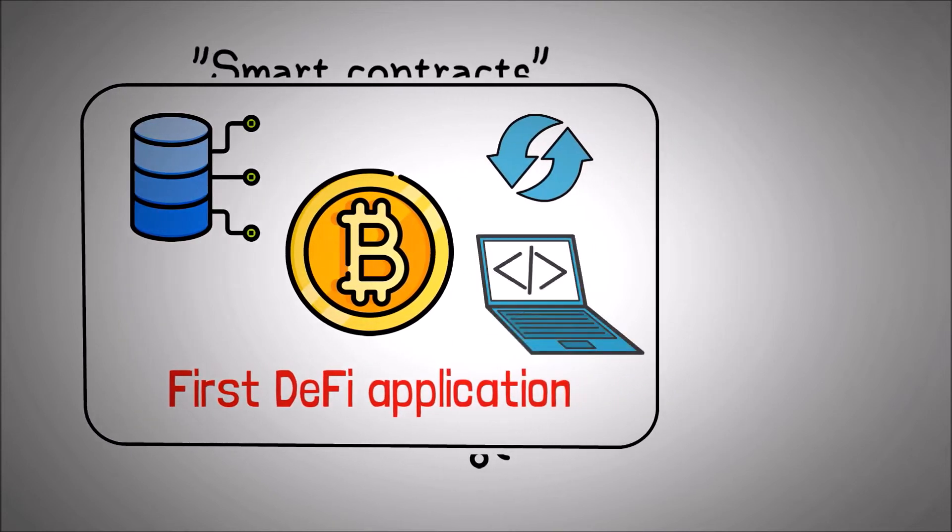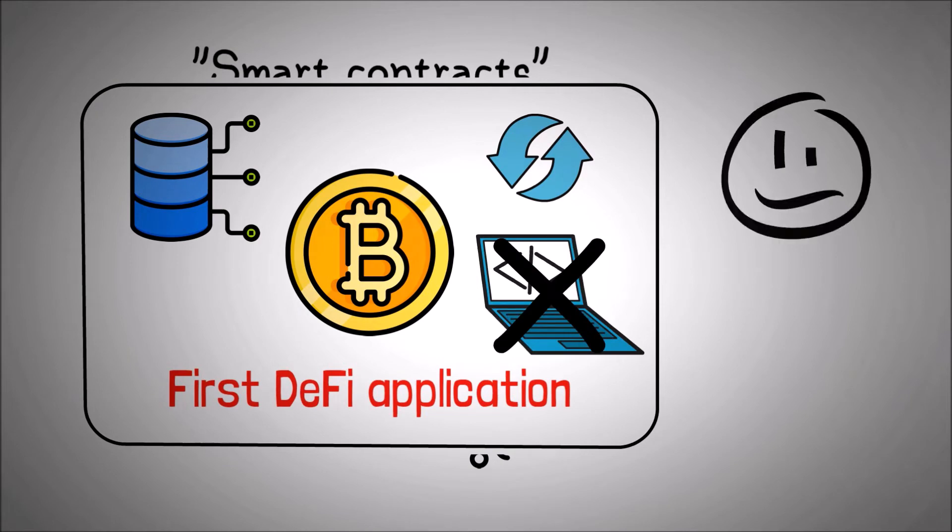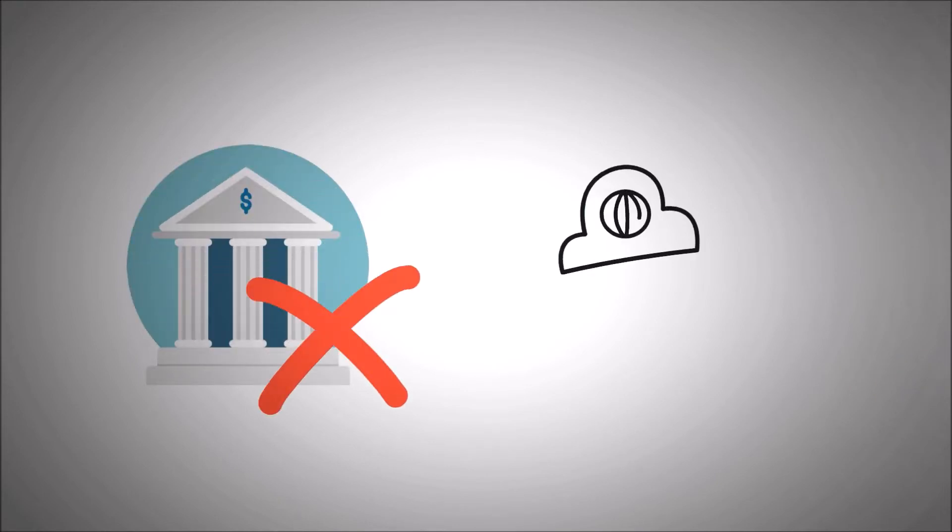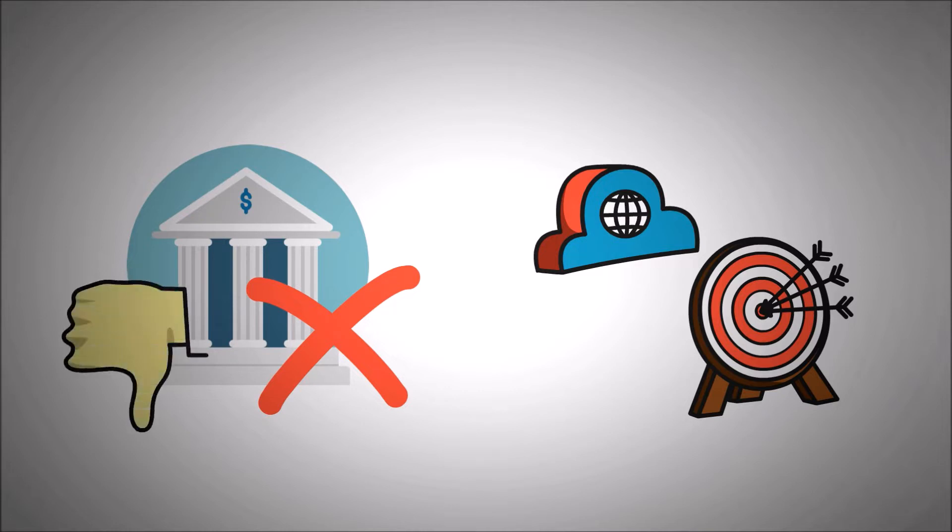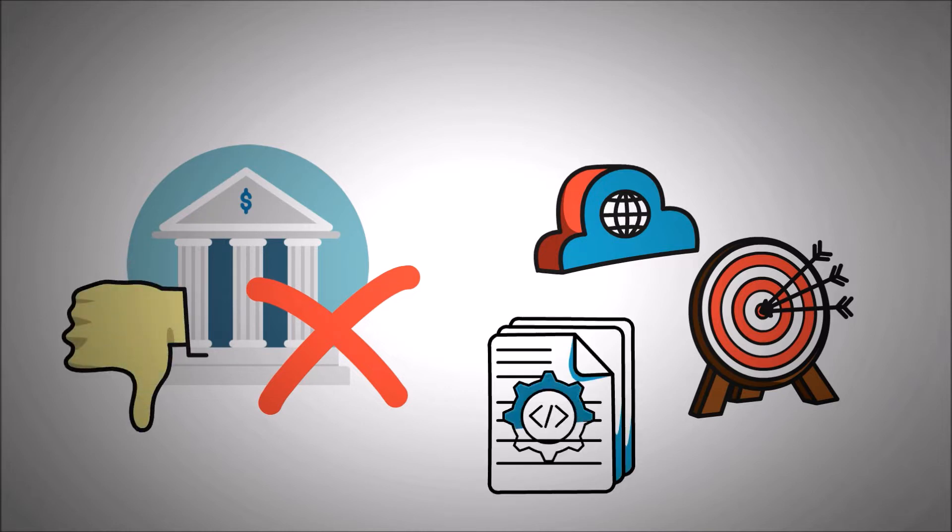But it isn't programmable. Sounds odd right? Why would you want to program your currency? Well as I mentioned earlier, in the absence of intermediaries, the alternative system must ensure that the intended goal of the transaction is actually achieved. In other words, if no one controls the system, you would need a set of rules that make sure that a certain action is being conducted.